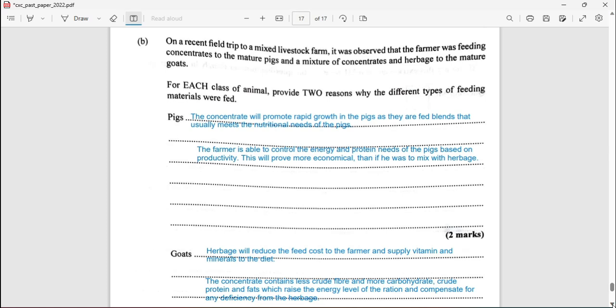For the goat: Herbage will reduce the feed costs to the farmer and supply vitamins and minerals in the diet. Secondly, the concentrate contains less crude fiber and more carbohydrate, protein and fat. It will raise the energy level of a ration and compensate for any deficiency from the herbage.